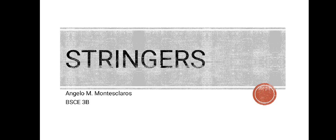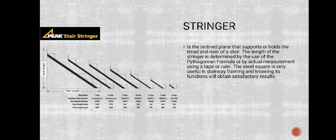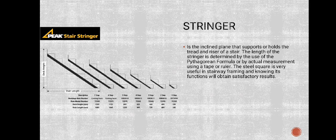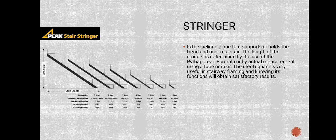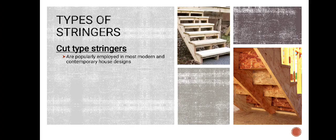Hi, this is Angelo Montes Claros reporting on stairs. My topic is about stringers. A stringer is the inclined plane that supports or holds the tread and riser of a stair. The length of the stringer is determined using the Pythagorean formula or by measuring it with a tape or ruler. The steel square is very useful in stairway framing, and knowing its function will obtain satisfactory results.